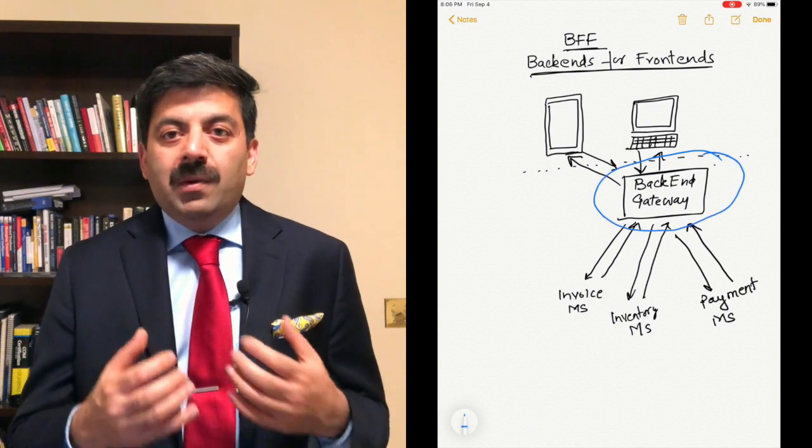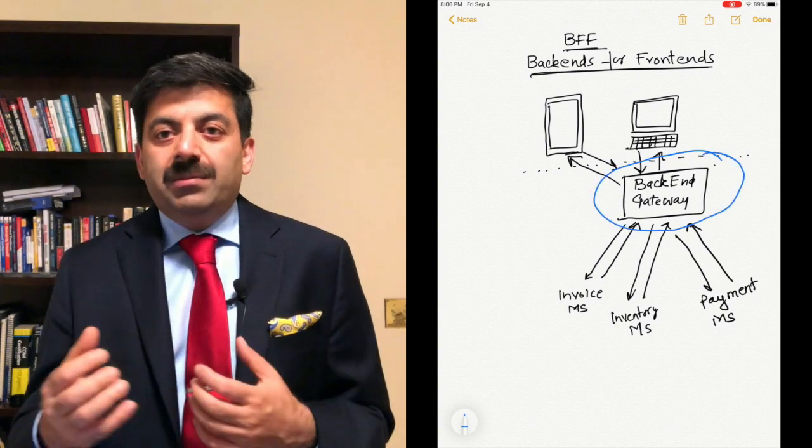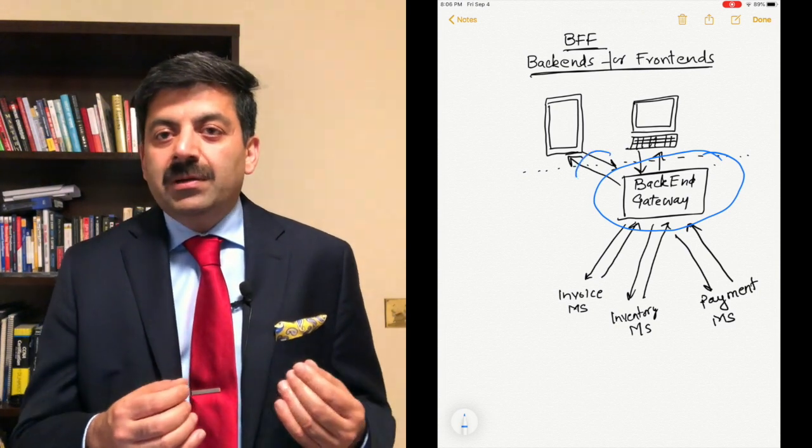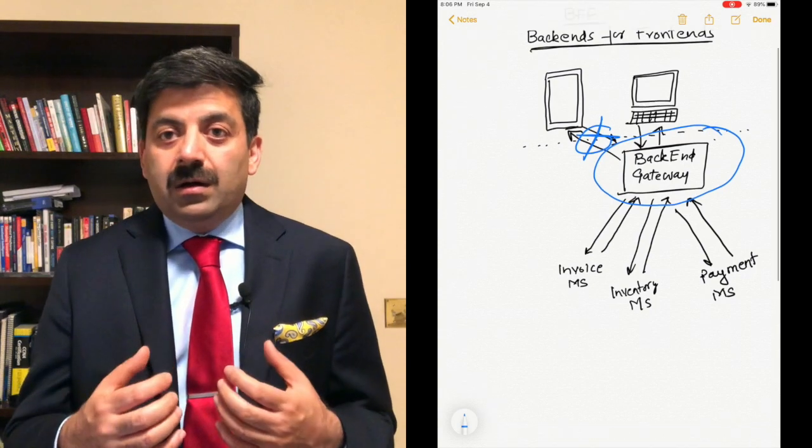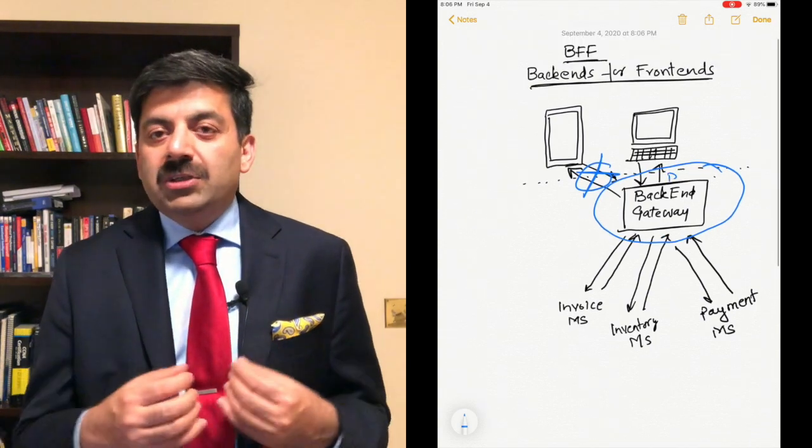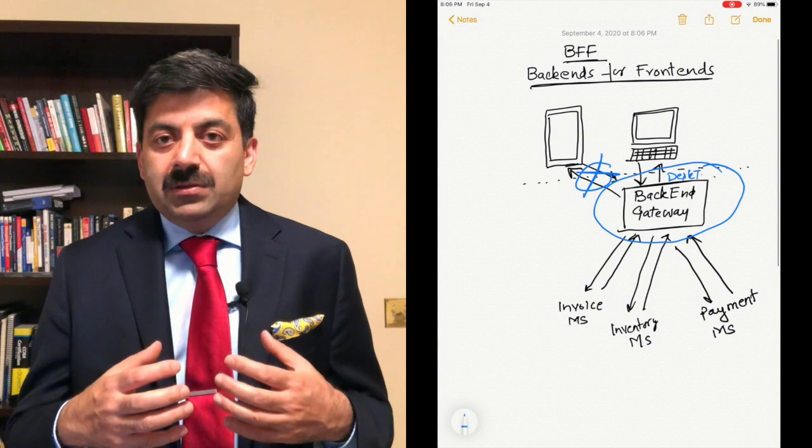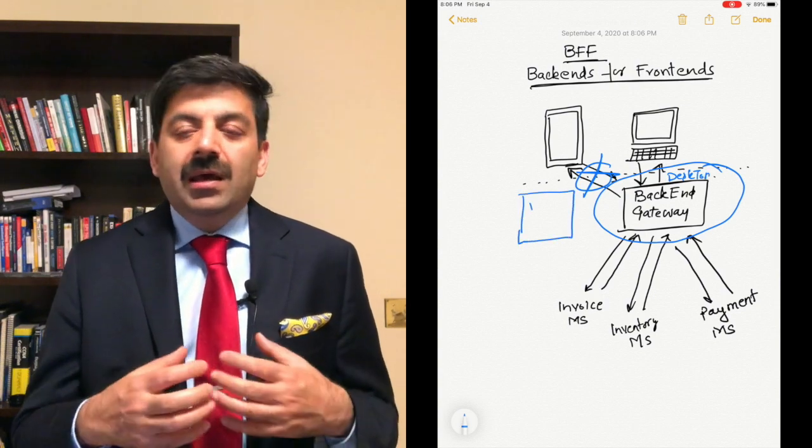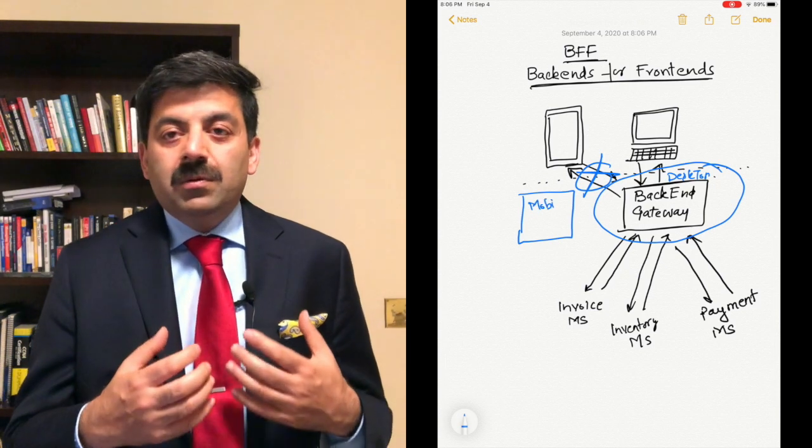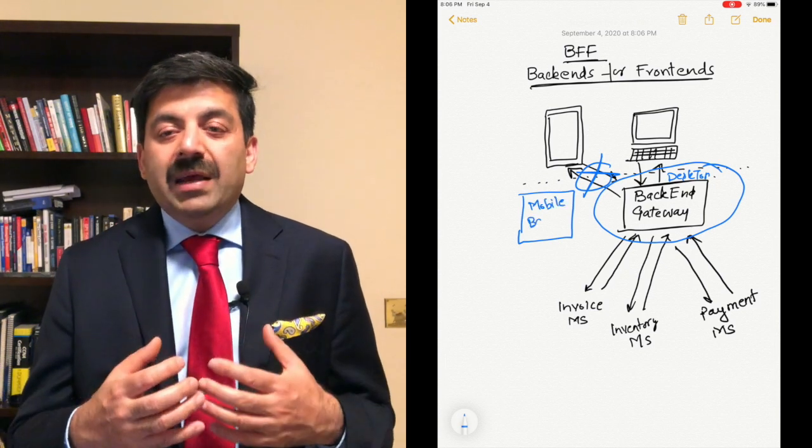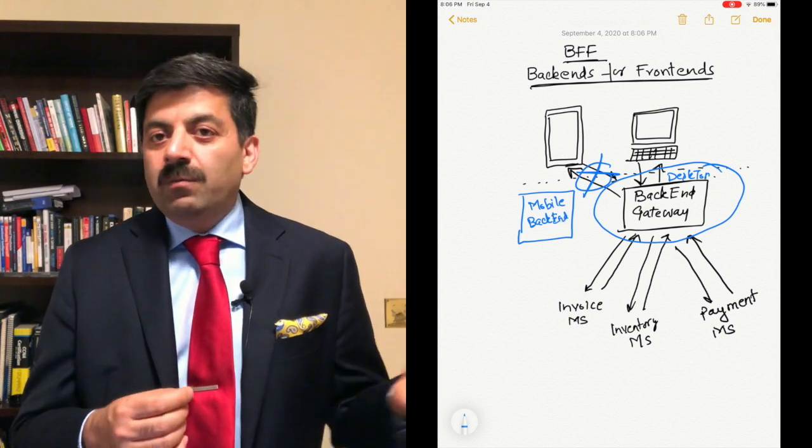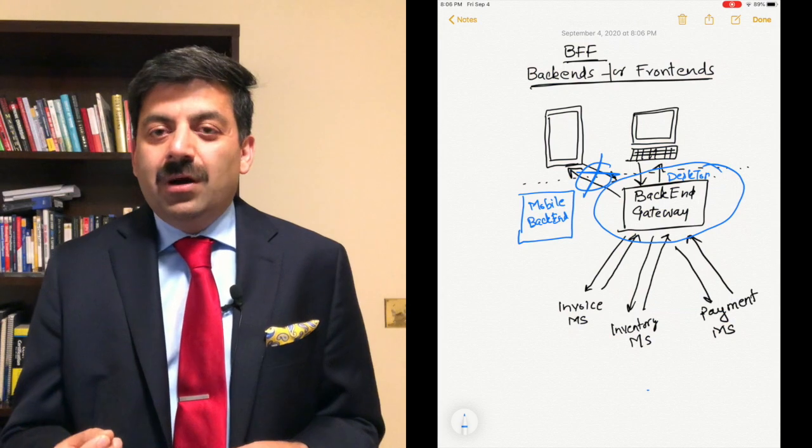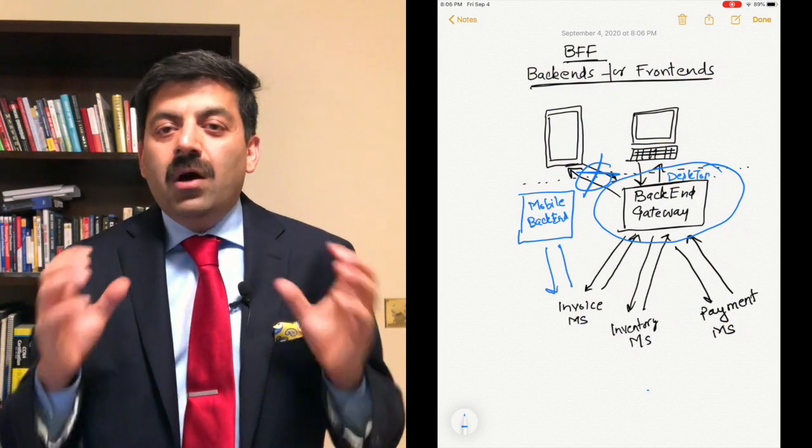Your mobile team may be different, your desktop team may be different. So if mobile team has to ship a product, they have to work with desktop people to make sure that this gateway is published, this general gateway is published. You can see it's not a good solution. If mobile people introduce some bugs, it can bring down the desktop. So there's a dependency bottleneck.